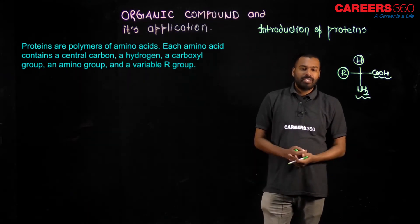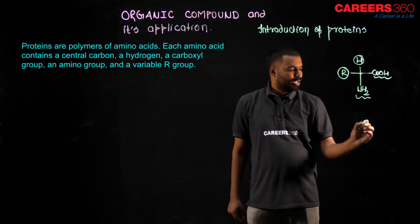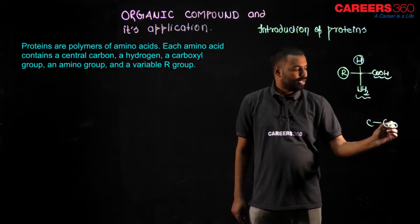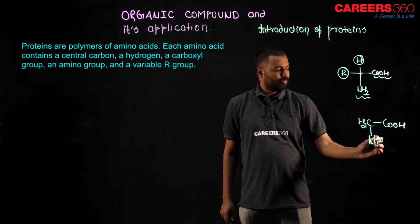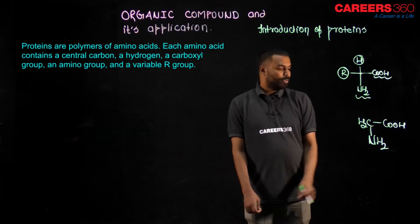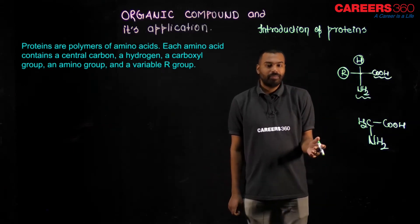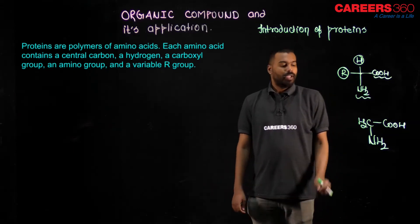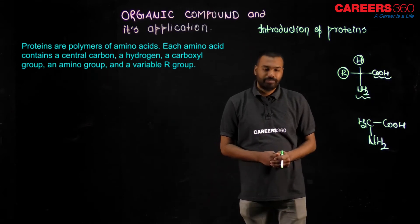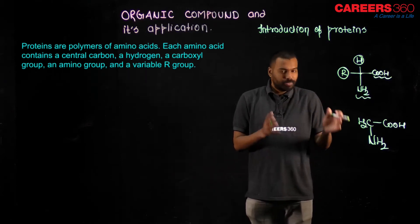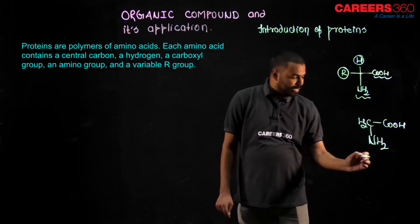Sometimes R is H. When R is H, the compound looks like: a central carbon with COOH, H, H (so CH2) and NH2. This compound is very important and famous because it is the smallest possible amino acid, and its name is glycine.